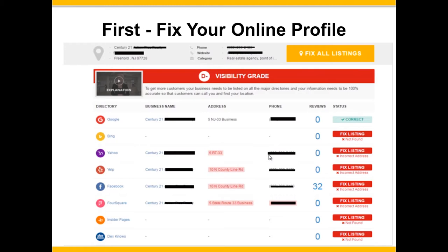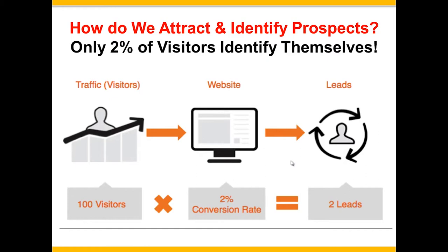I pulled a couple of Century 21s and there were a lot of them that had mistakes and errors all over the place — from incorrect phone numbers to incorrect addresses. So you want to try and fix your online profile. Getting back to what we're really here for: how do we attract and identify prospects? Only 2% of visitors to a good solid real estate website with an IDX feed actually ever identify themselves. That means 98 out of every 100 visitors go away without ever contacting you, and the typical realtor converts around 4% of those leads — that's one sale per roughly 1,200 visitors. That's terrible, so let's try and fix it.